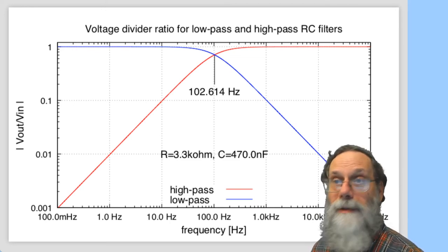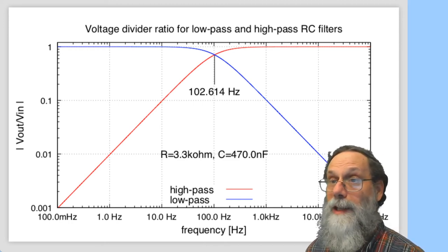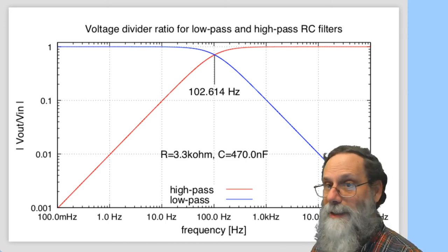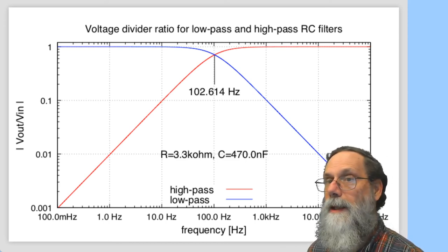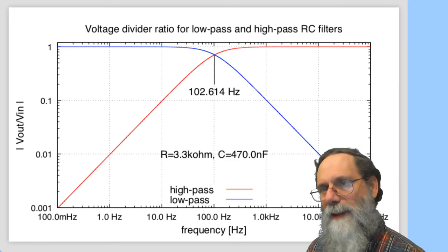The high-pass filter, which is kind of a left-right reversal here. At high frequencies, the gain is 1, and at very low frequencies, the gain is a nice one decade per decade. And in between, you have a little bit of a rounding.